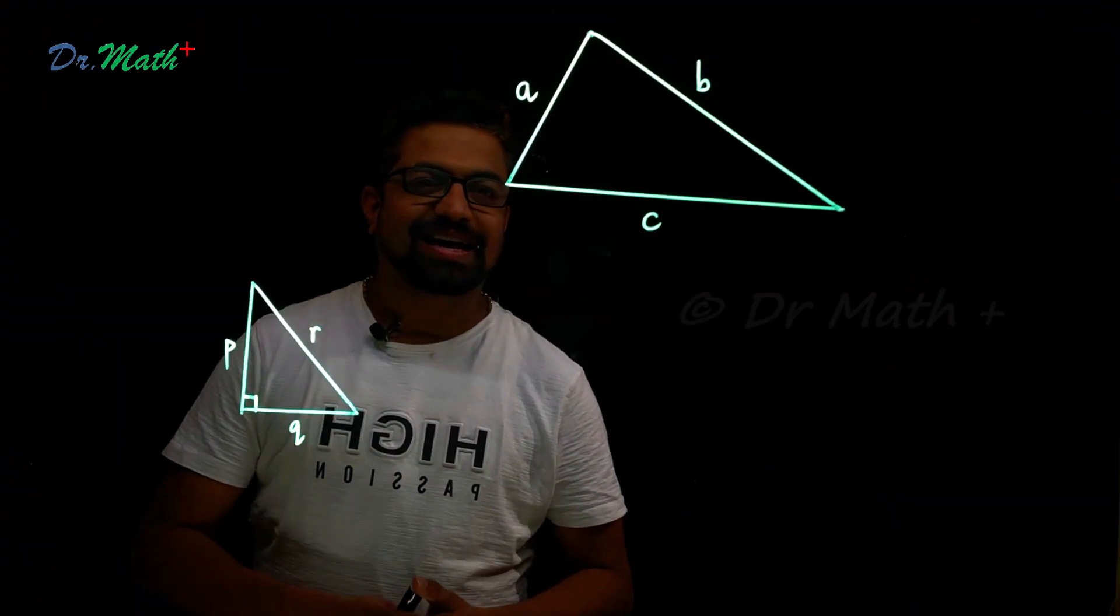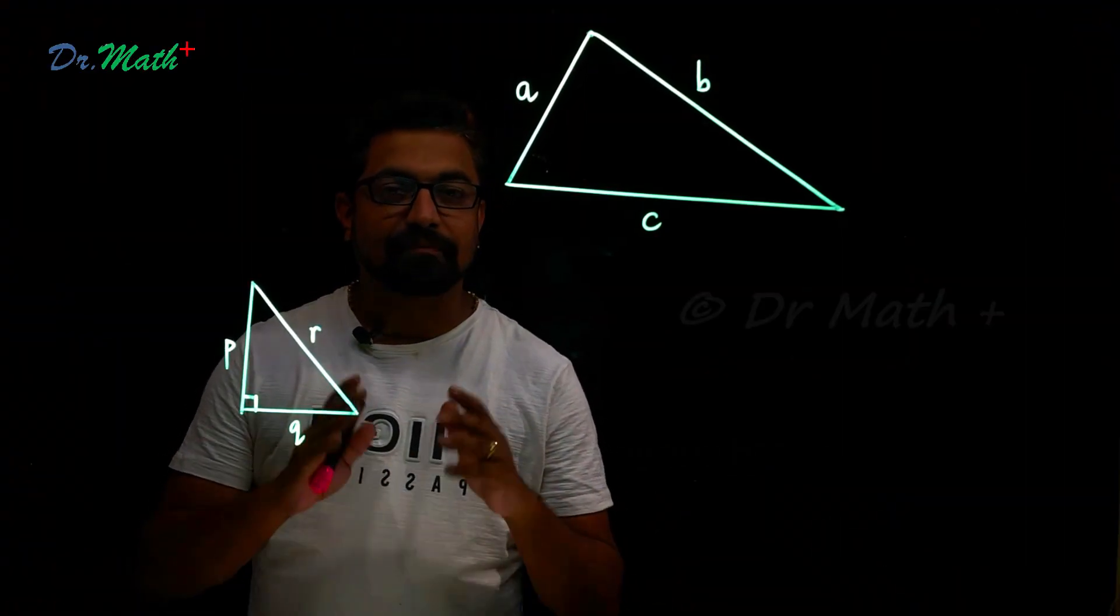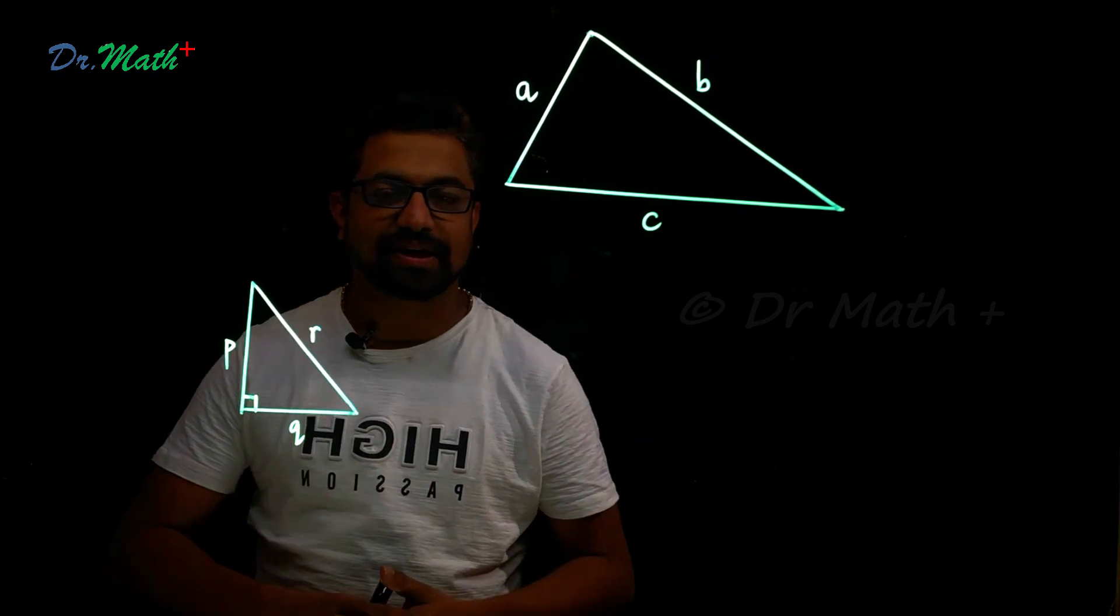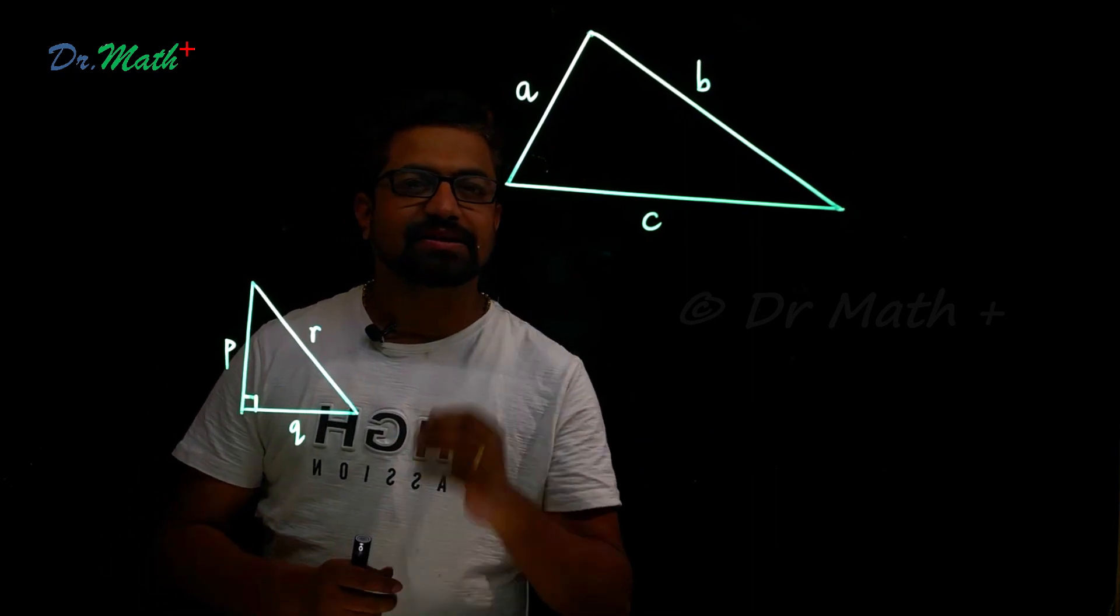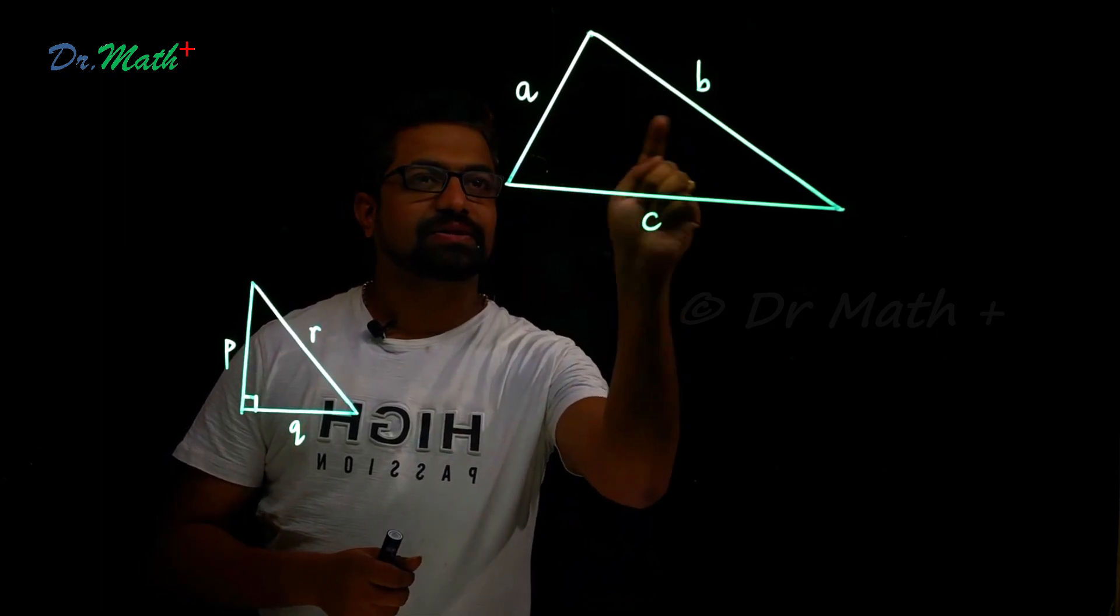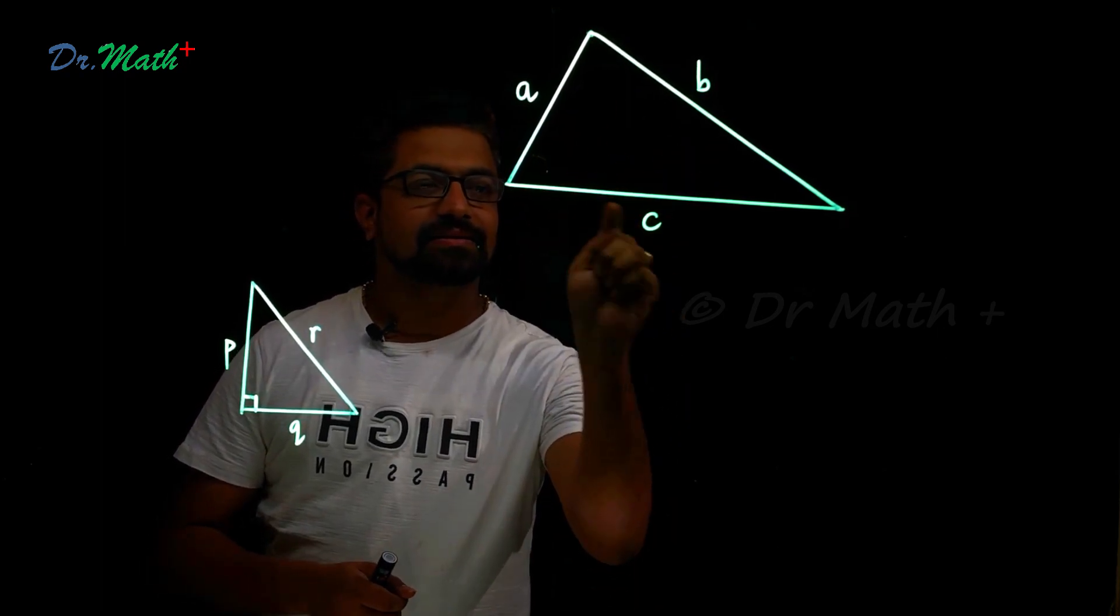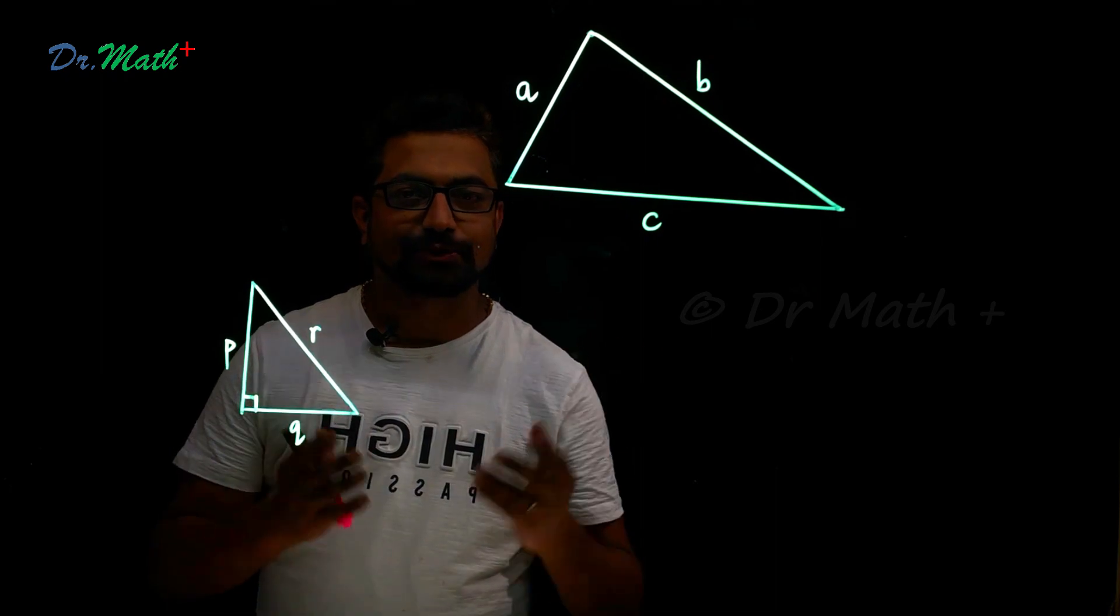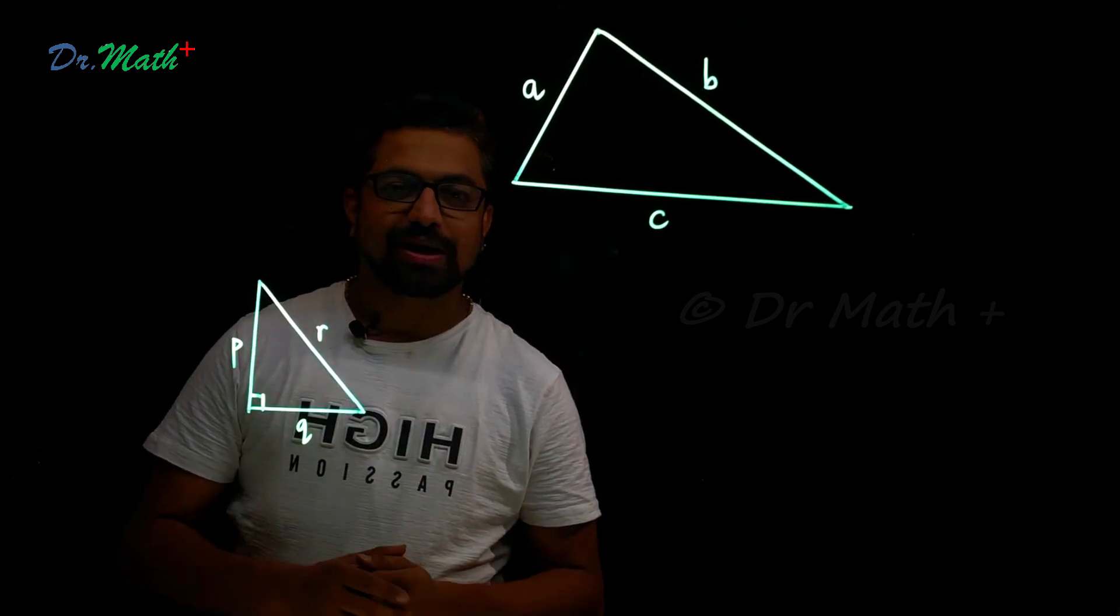We all know that triangle has three sides. There are many interesting facts about triangle. One of the interesting facts about the triangle is sum of any two sides of the triangle is greater than the third side. Do you know why this is true? Hello everyone, welcome to Dr. Math.